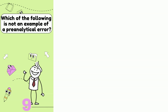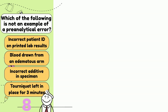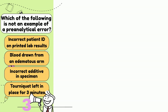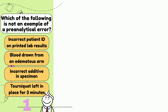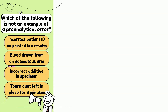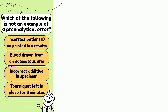Which of the following is not an example of a pre-analytical error? Incorrect patient ID on printed lab results, blood drawn from an edematous arm, incorrect additive in specimens, or tourniquet left in place for 3 minutes?